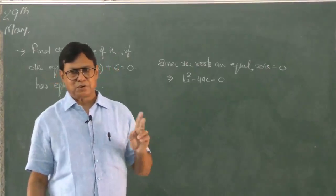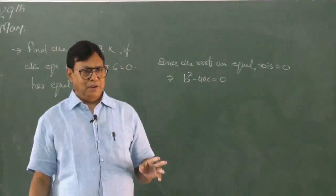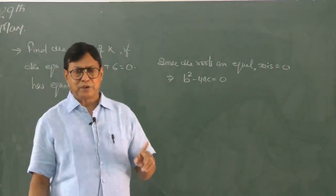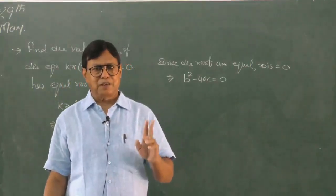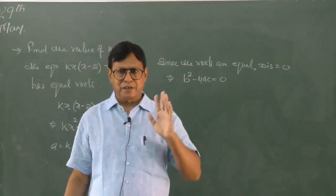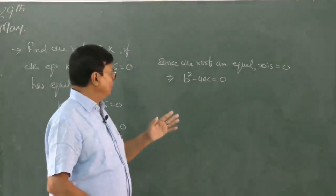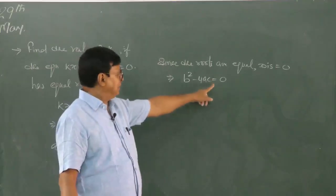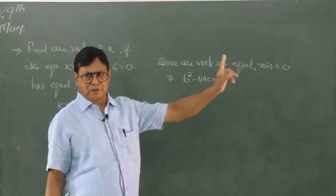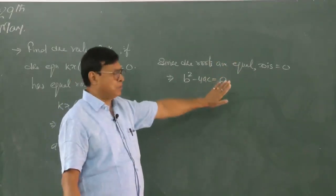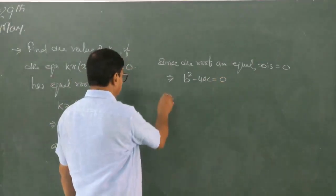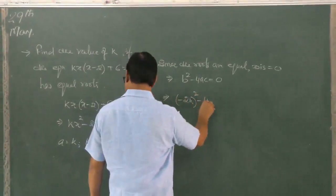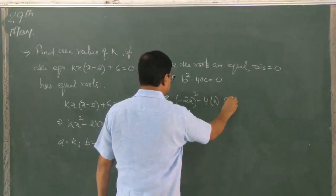When the problem states the roots are equal, start with B squared minus 4AC equated to 0. If it says roots are imaginary or complex, B squared minus 4AC is negative — so whether it equals 0, is greater than 0, or less than 0 must be mentioned as given in the sum. Then substitute: minus 2k whole squared minus 4AC equals 0.